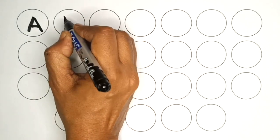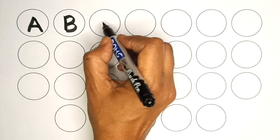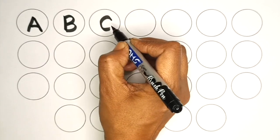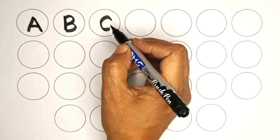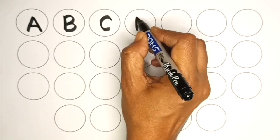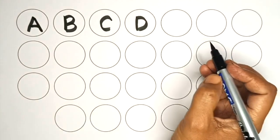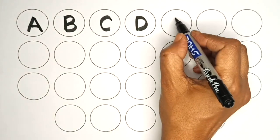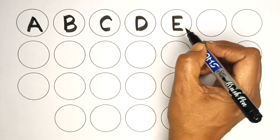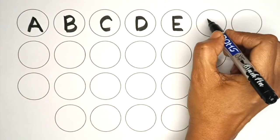B, B for ball. C, C for cat. D, D for dog. E, E for elephant.